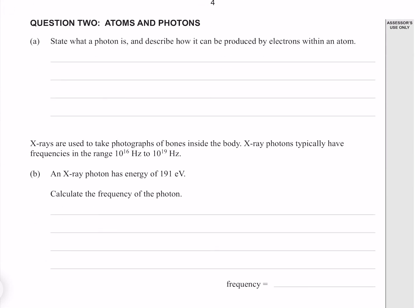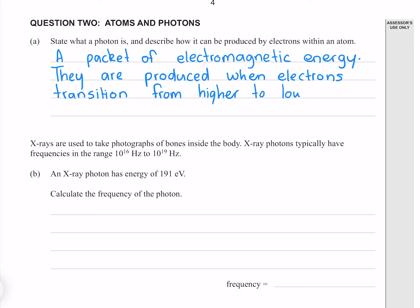Question 2. State what a photon is and describe how it can be produced by electrons within an atom. A photon is a packet of electromagnetic energy. They are produced when electrons transition from higher to lower energy shells.